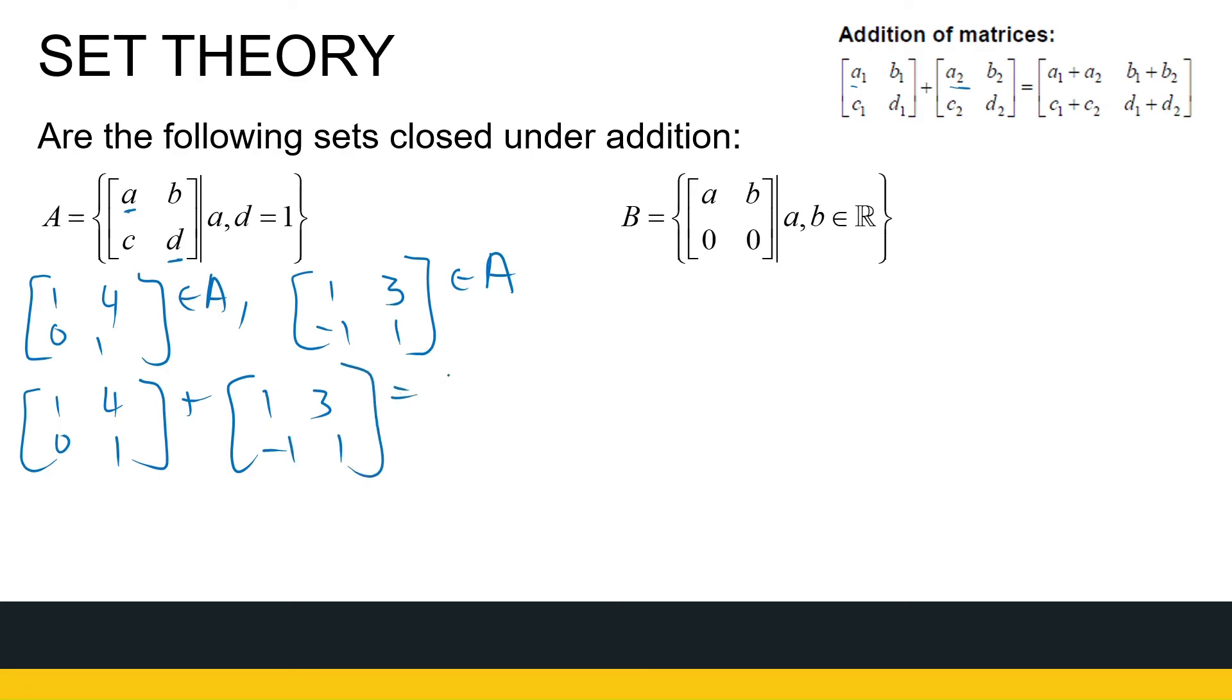minus 1, 1, if I add those together, I get [2, 7; -1, 2], and that's not in A. So A is not closed under addition.